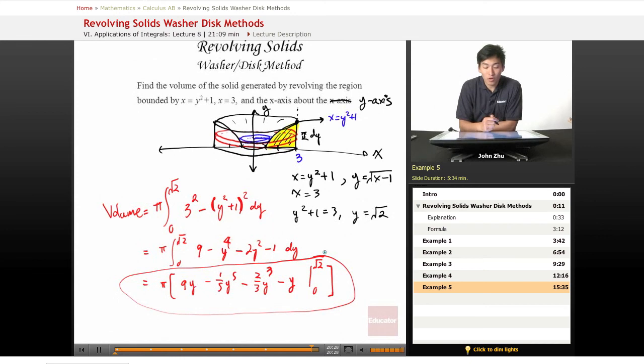So that was a look at various different forms of washer and disk method for solving for volume between regions of revolving solids. As long as we keep clear which direction we're integrating from, the bounds, the exact region, and the radiuses of the disk and washer, there shouldn't be many curve balls they can throw at you on the AP exam. That does it for revolving solids. Thanks for watching educator.com. We'll see you in the next lesson.